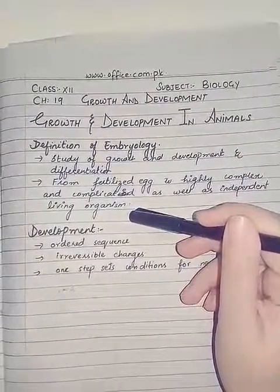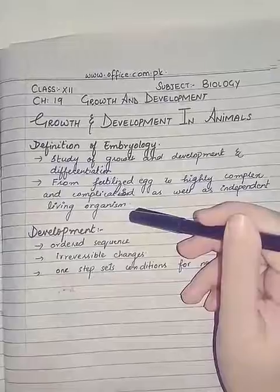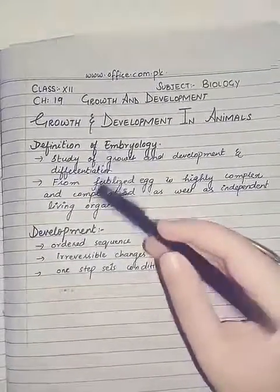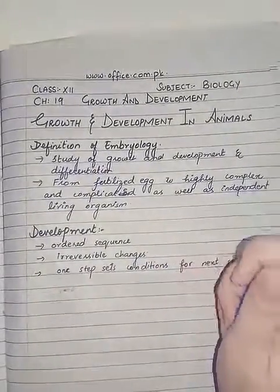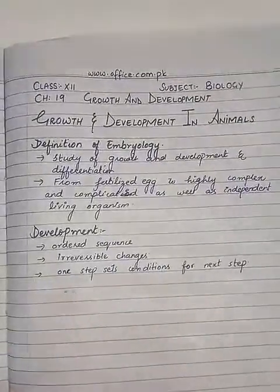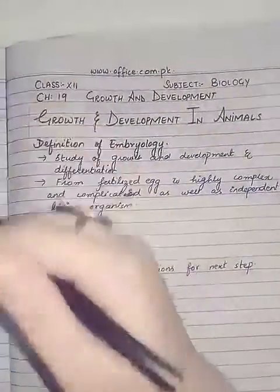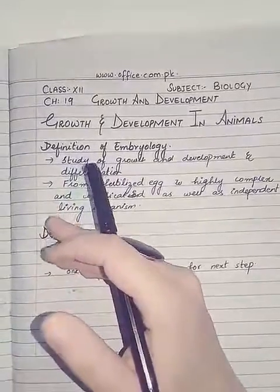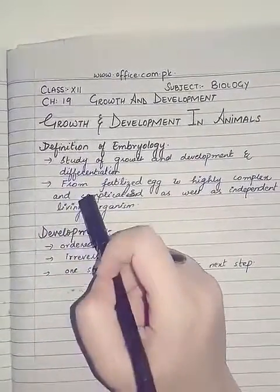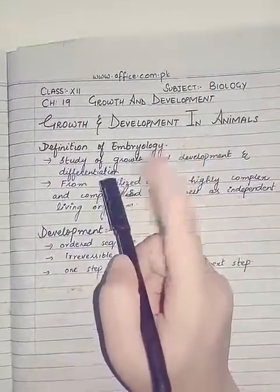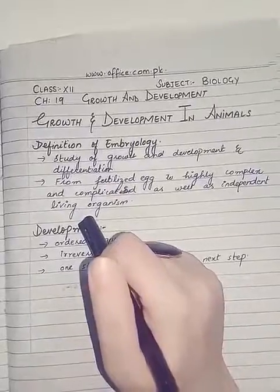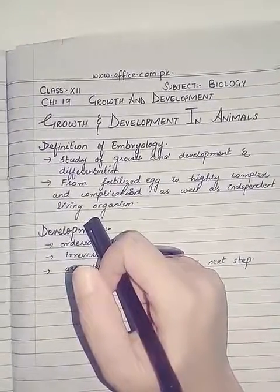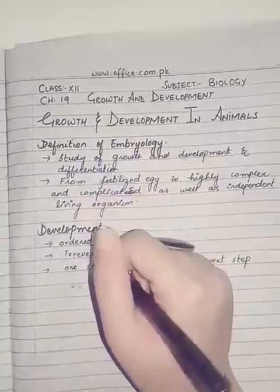studied in a special branch of biology known as embryology. In this subject, there is study of growth, development, and differentiation processes that an organism undergoes in the course of its life — from a fertilized single egg to a highly complex, complicated, and independent living organism, just like its parents.